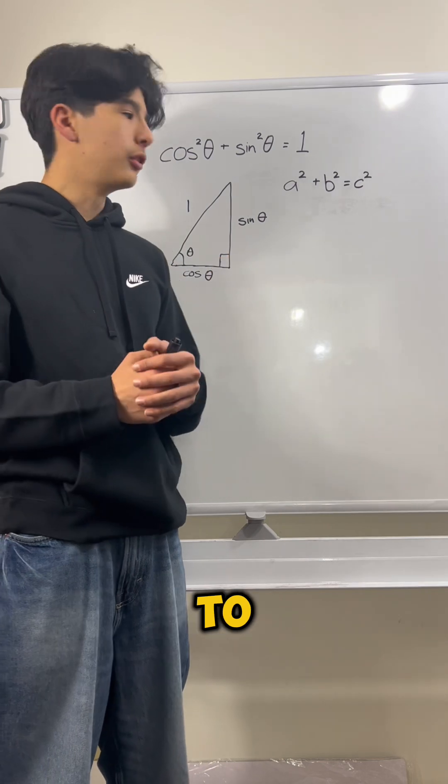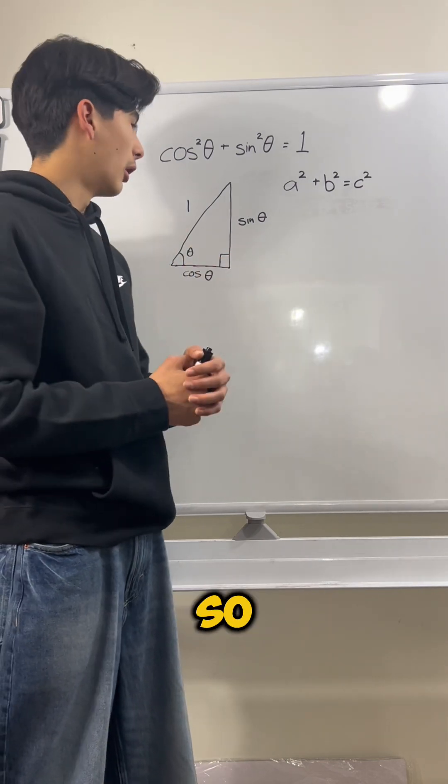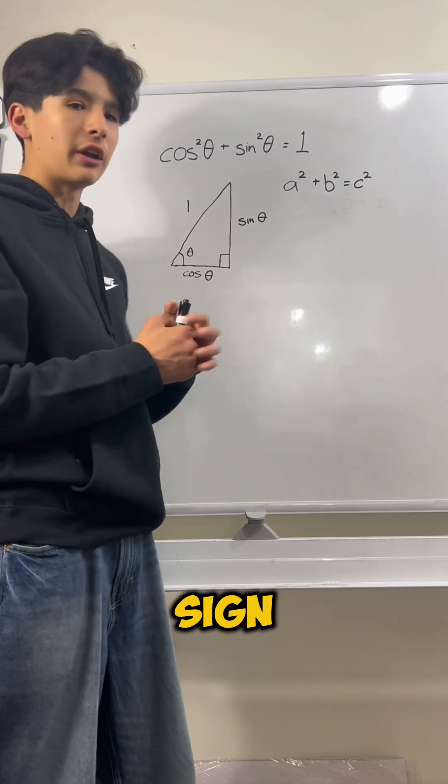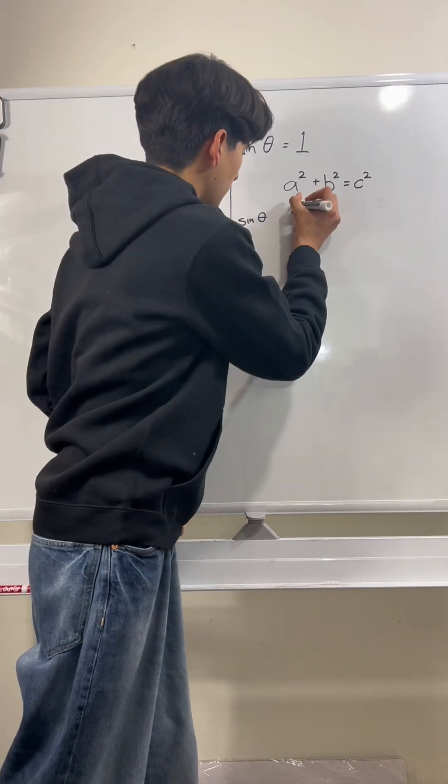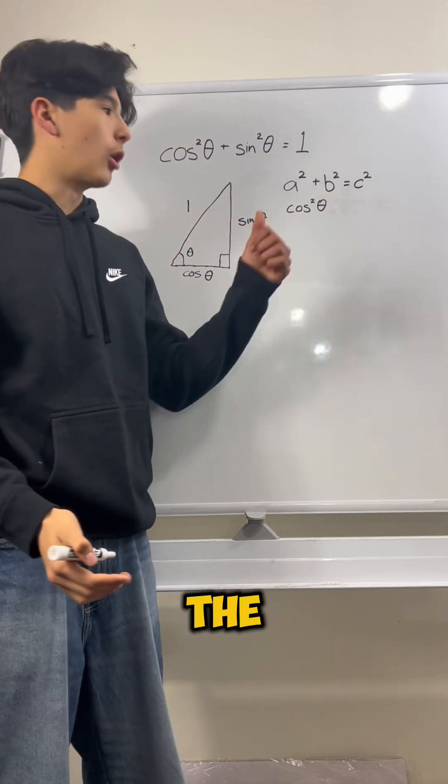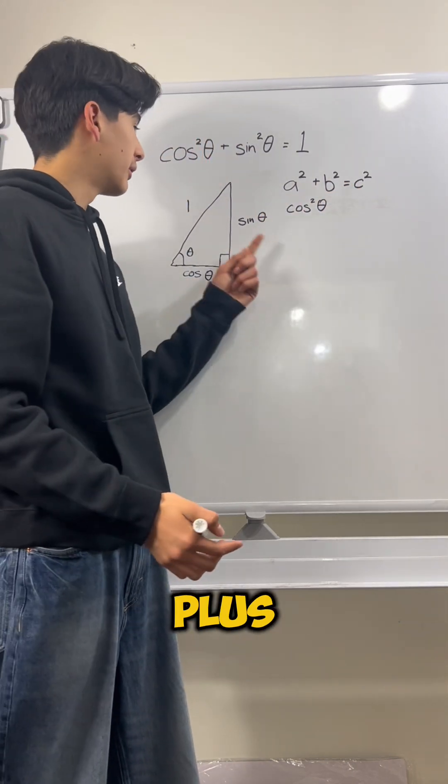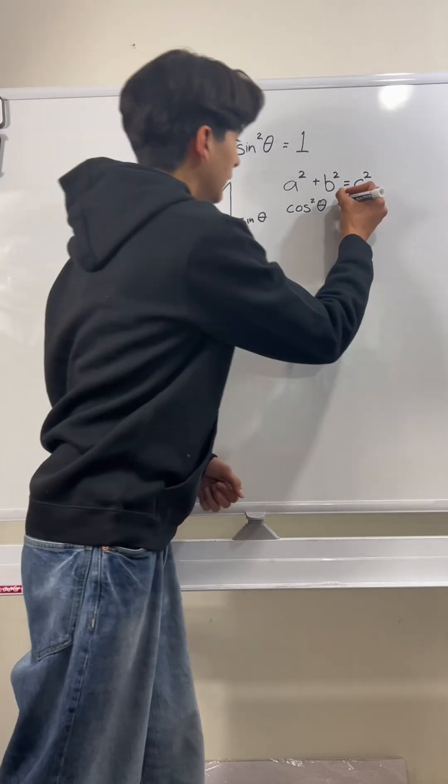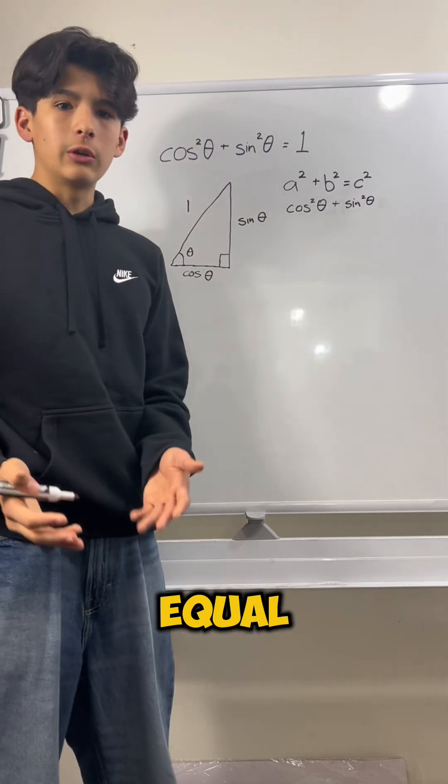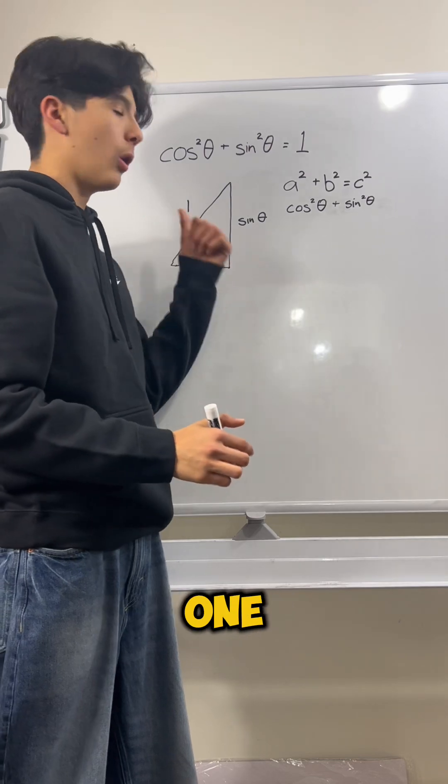Let's apply this to our unit circle triangle. One of the side lengths is cosine of theta, so that means cosine of theta squared plus the sine of theta squared, because it's the other leg, should equal the hypotenuse squared, which is just 1.